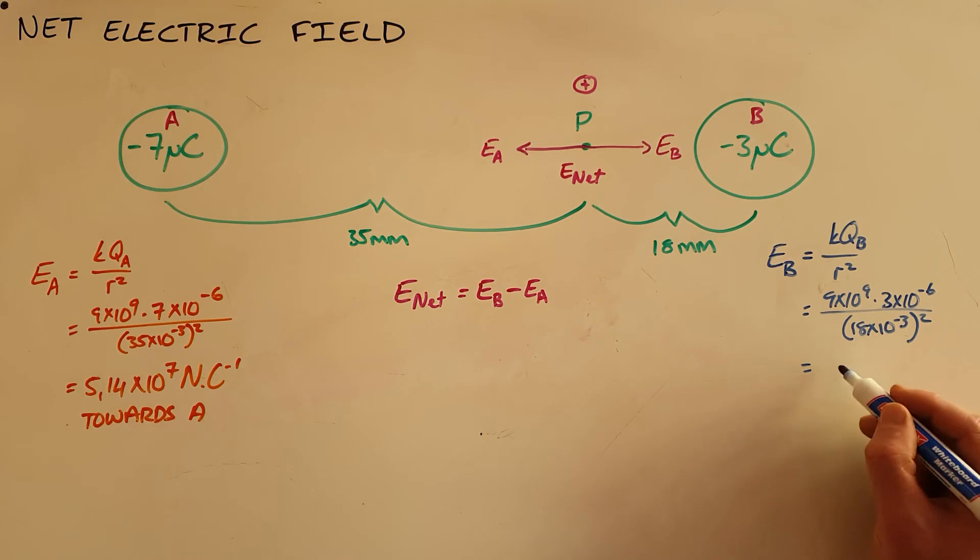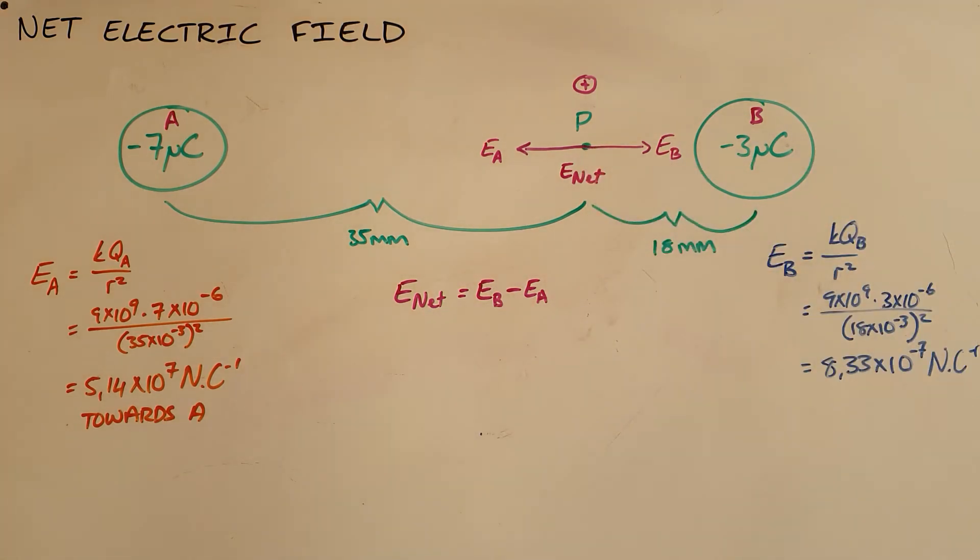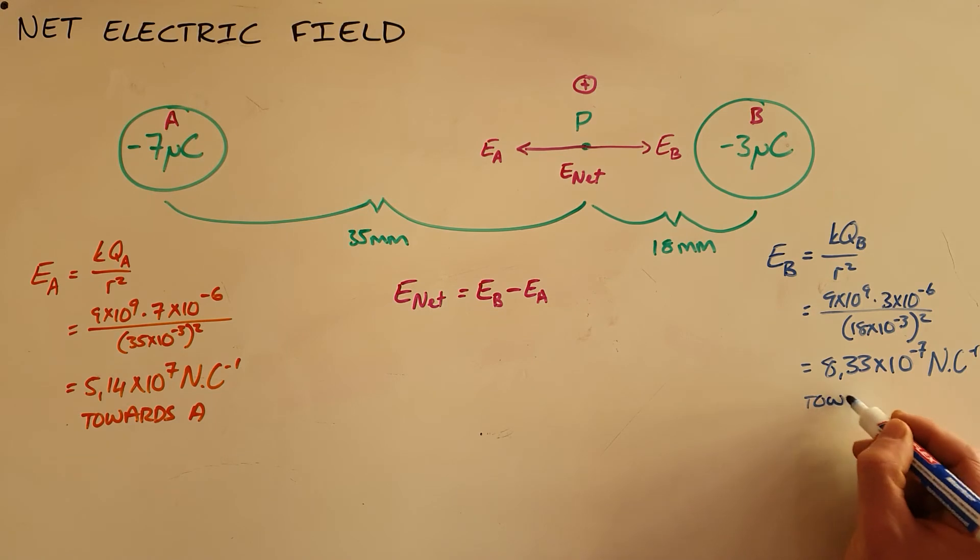Which means that our electric field as a result of B would then be 8.33 times 10 to the negative 7, once again measured in newtons per coulomb, and a positive charge here would experience a force towards B.